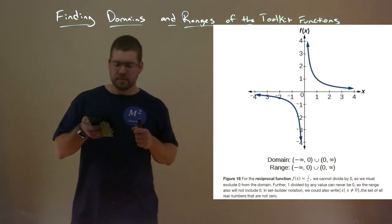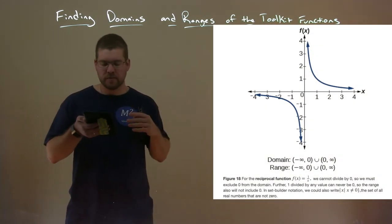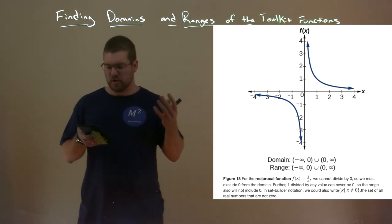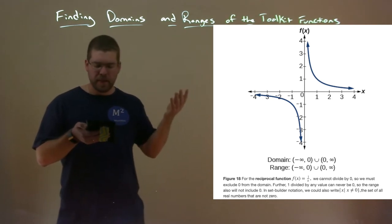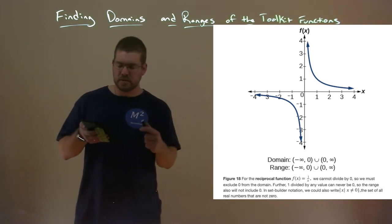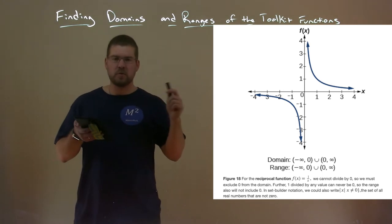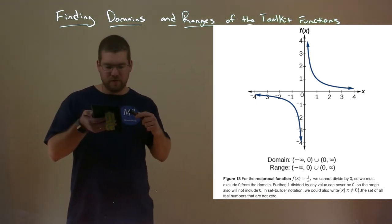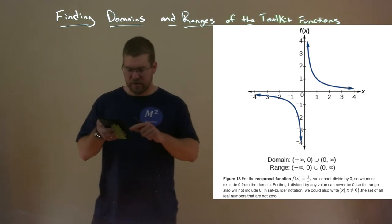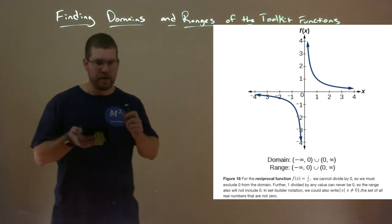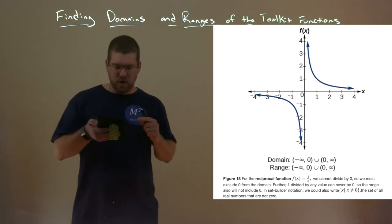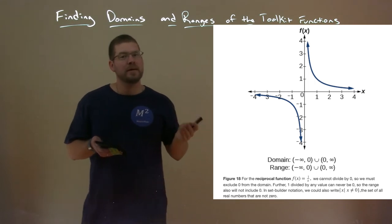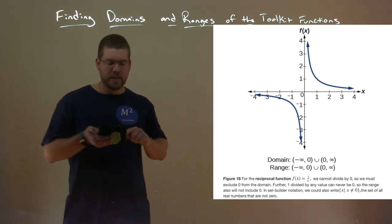We have the reciprocal function f of x equals one over x. We cannot divide by zero, so we do not include zero in our domain. The domain is from negative infinity to zero, not including zero, union zero to positive infinity. The range is the same: negative infinity to zero union zero to positive infinity. There's no value you can plug in for x that gives zero, since one over any number won't get you zero.